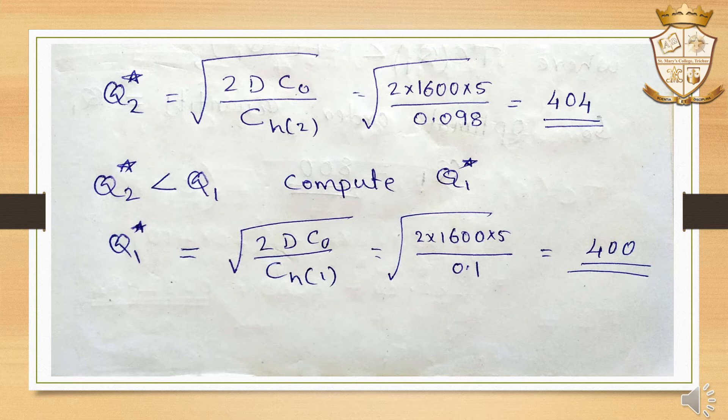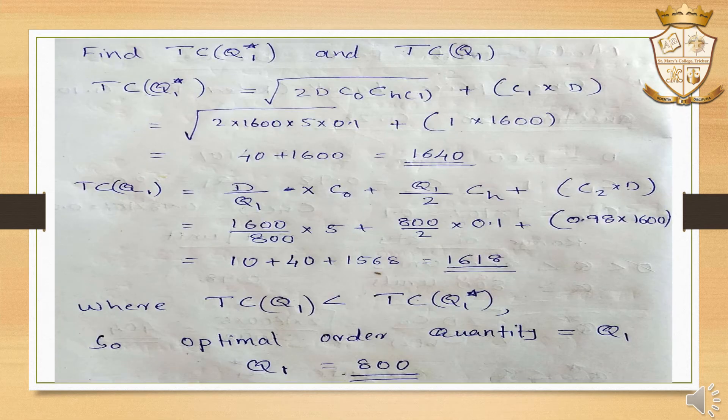Now we calculate Q2 star. Since Q2 star is greater than Q1, we calculate Q1 star as well. Q1 star = root of (2·D·CO / CH1). Applying the equation, Q1 star = 400. Then we calculate TC(Q1 star) = Q1 star holding term + C1 × D, which equals 1641.